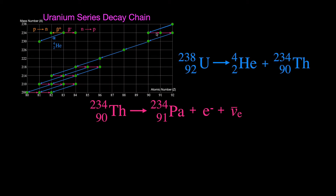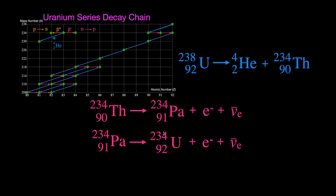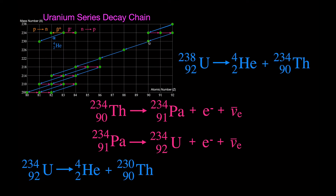Protactinium-234 then undergoes beta-minus decay again: atomic number increases from 91 to 92, mass number stays at 234, giving us uranium-234 — back to uranium but a different isotope from the starting uranium-238. Uranium-234 then undergoes alpha decay: subtract 2 from atomic number (92 − 2 = 90) and 4 from mass number (234 − 4 = 230), giving thorium-230. Again this is a different isotope from the earlier thorium-234.